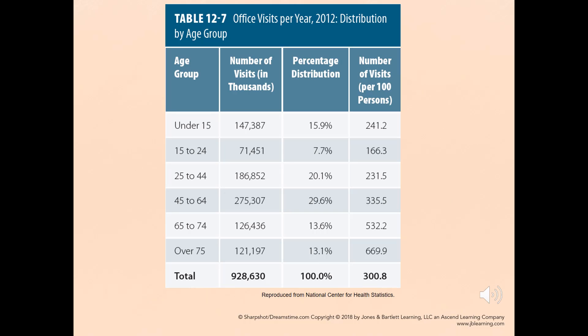Table 12-7 shows an example of office visits per year in the 2012 distribution by age group. The largest percentage is in the 45 to 64 age range, and we are seeing that percentage shift as baby boomers continue to age and retire.